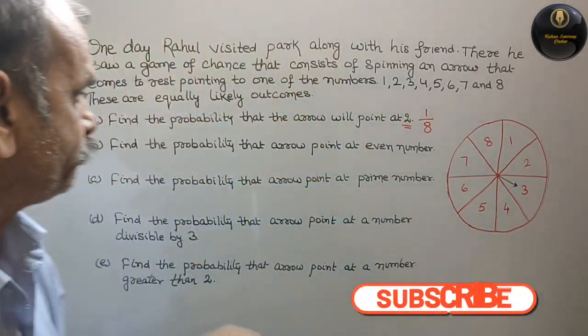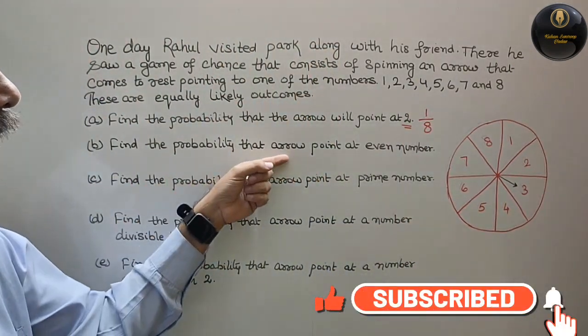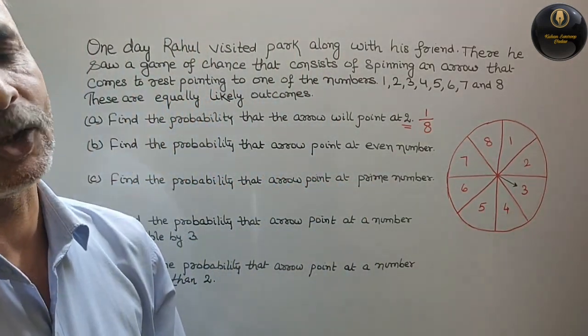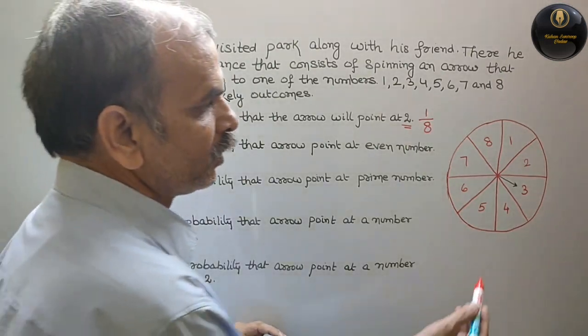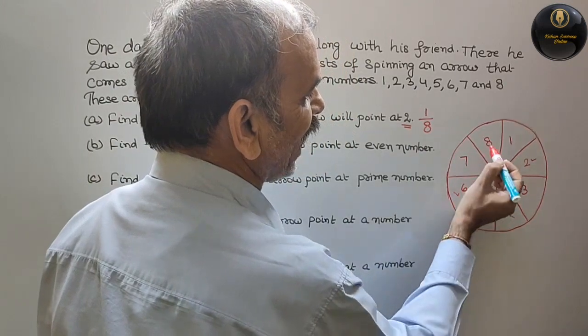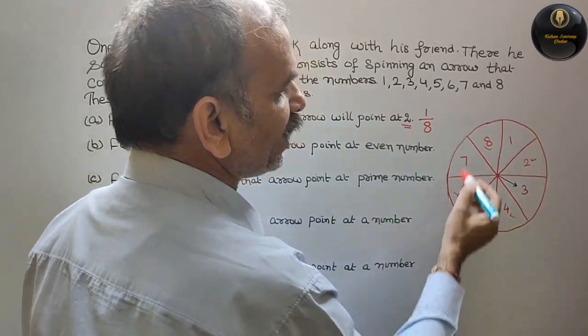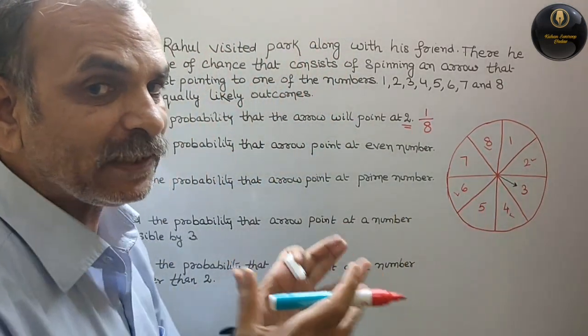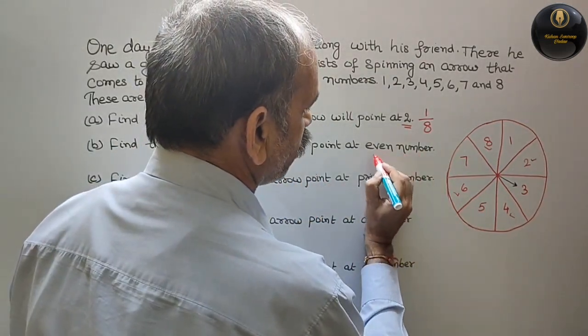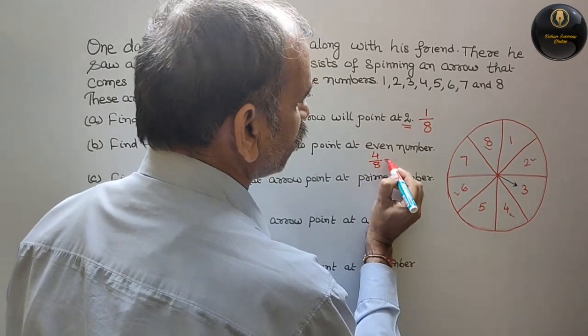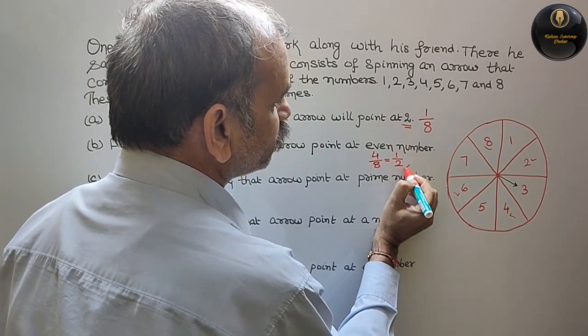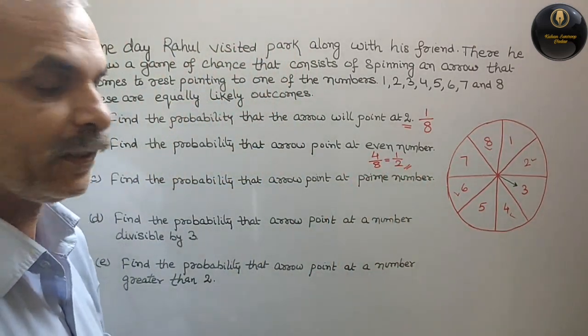Next. Find the probability that arrow points at even number. So 2, 4, 6 and 8. So how many are these? 4. And total is 8. So 4 by 8, that is equal to, reduce it, it will be 1 by 2.